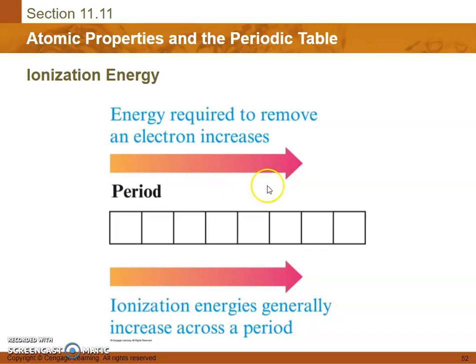So as we move from left to right across our period, the amount of energy needed to remove an electron increases.